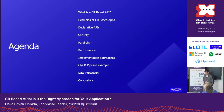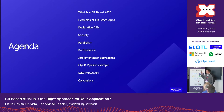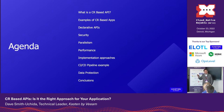Some of the stuff I want to cover here: we'll talk about what it is, some examples, declarative APIs — which are tricky to get right — a little on security, parallelism, performance, some ways you can implement an application. We put together a little example with a CI/CD pipeline, and then data protection, which is near and dear to my heart, and then some conclusions.